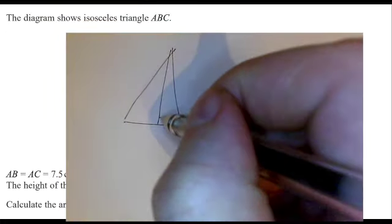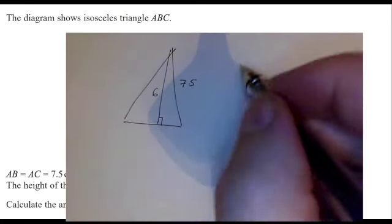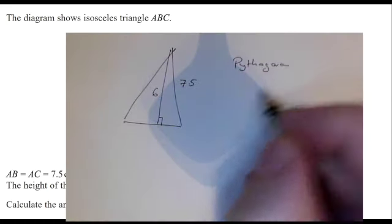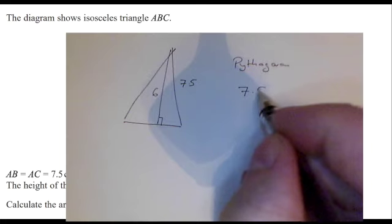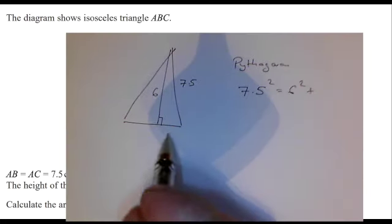For this particular question I've been given a hypotenuse and one of the legs of a right-angled triangle, so I think I can use Pythagoras, which is a squared plus b squared equals h squared, that's a squared plus b squared equals the hypotenuse squared, to work out the length of the third side.